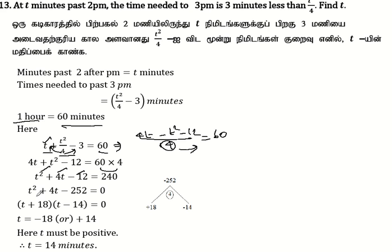t² plus 4t minus 12 minus 240 equals t² plus 4t minus 252 equals 0.